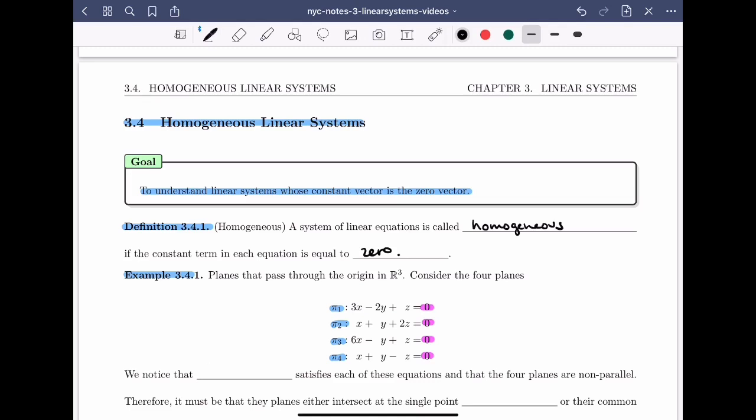So we notice that (0, 0, 0) satisfies each of these equations and that the four planes are non-parallel. How do I know they're non-parallel? Well, it's because the normal vectors of the planes aren't parallel with each other. For example, the normal vector for pi 1 is (3, -2, 1), and the normal vector for pi 2 is (1, 1, 2). So I can definitely tell that these aren't scalar multiples of each other.